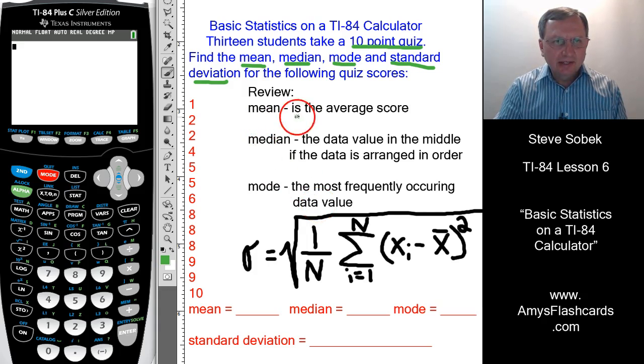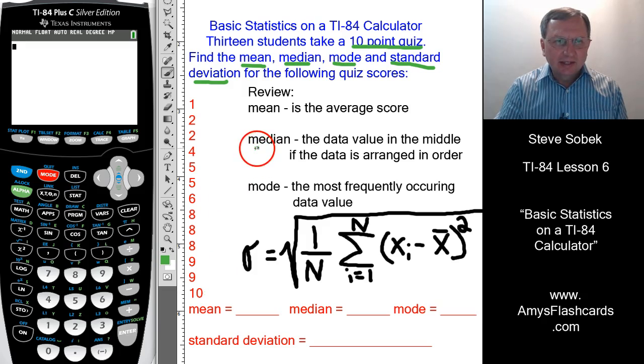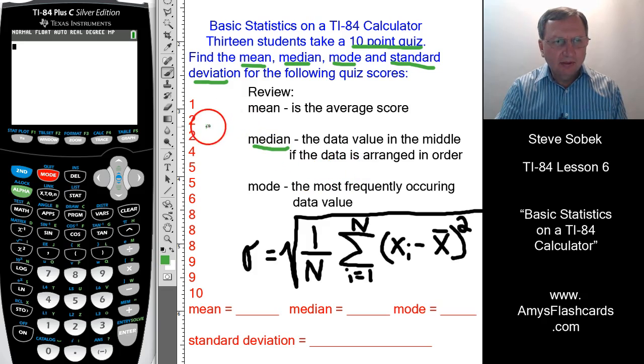The mean is the average. If you just add these up and divide by, in this case, 13, the number of data values. The median would be the data value that's in the middle if the data values are arranged in order, which they are. There's 13 of them, so the seventh one would be the one in the middle. So this would be the median in this case.